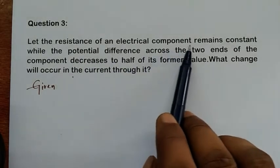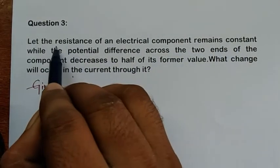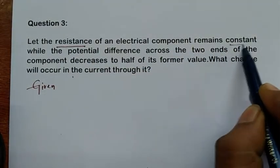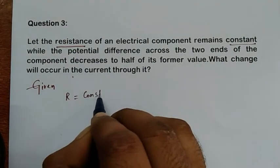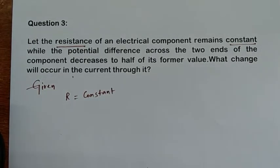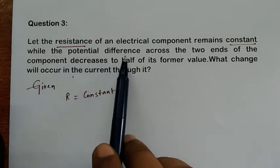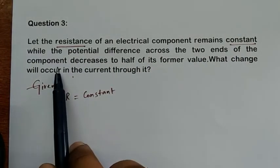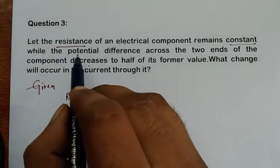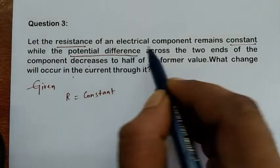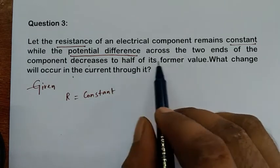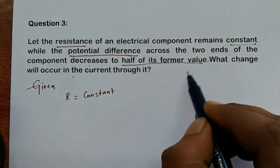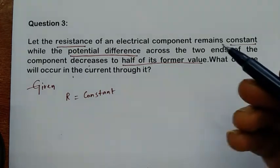First, the resistance of the electrical component remains constant — that means resistance is not changing, that is what is important here. And the potential difference across the two ends of a component decreases to half of its former value.